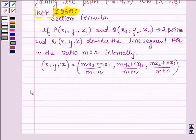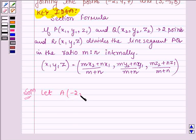Now let's start with the solution and let us denote the given two points by A and B. So A is (-2, 4, 7) and B is (3, -5, 8) be the two points.